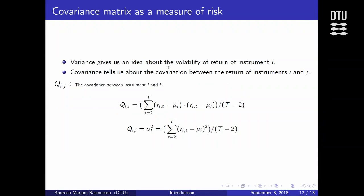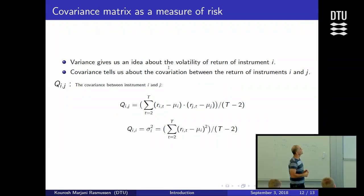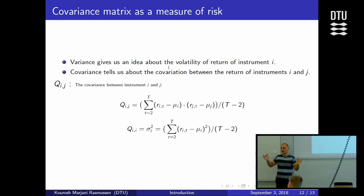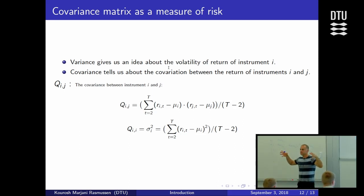And then we have the covariance matrix. So the covariance matrix, which is used as a measure of risk in the Markowitz setting, where the covariance matrix is defined like that. So you have the average returns for the asset i. And covariance says something about how the returns of two different assets are correlating with each other. Co-variating with each other.